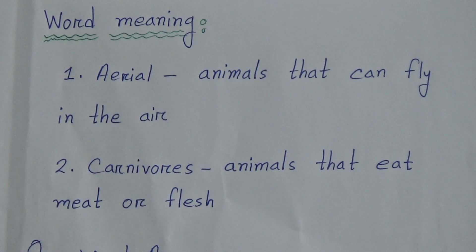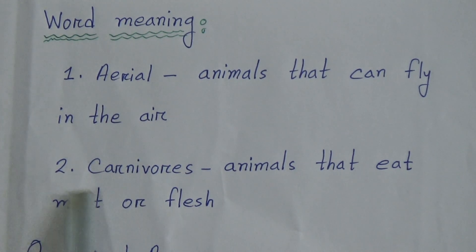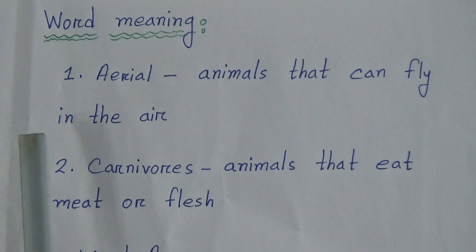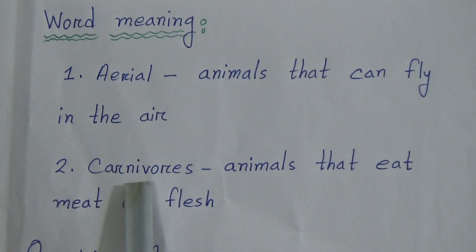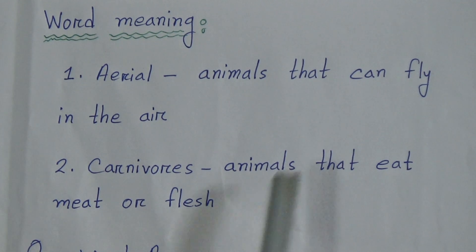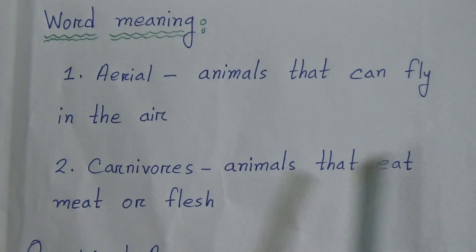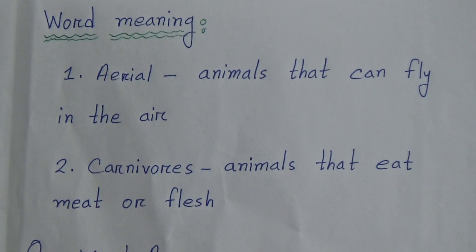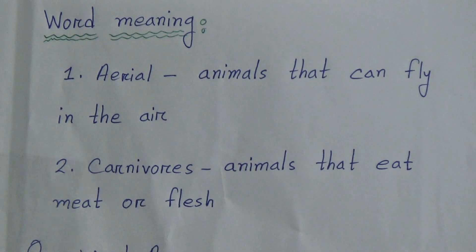Number two word is 'carnivorous.' Carnivorous spelling is C-A-R-N-I-V-O-R-E-S. Carnivorous meaning is: animals that eat meat or flesh.